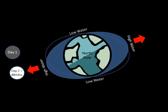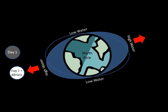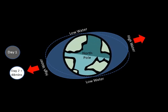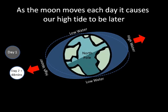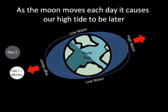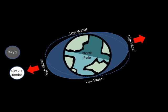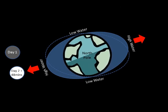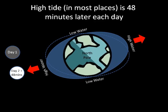As the moon is orbiting the Earth, it moves several degrees to the east each day. As a result, our high waters become later and later. High tide in most places is 48 minutes later each day.